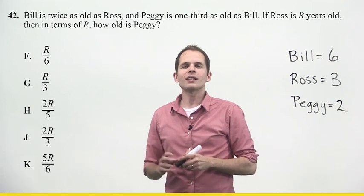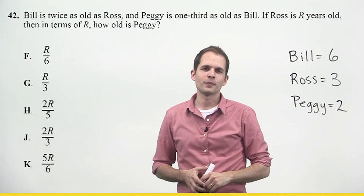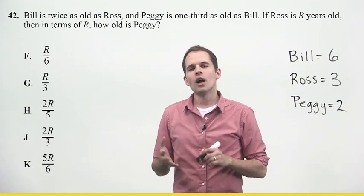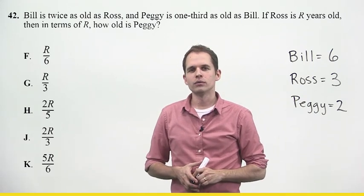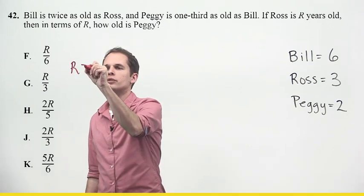So what I've done is I've taken these hypothetical ages, or ages in terms of r, and I assigned them numbers. Now what's the question asking for? It says, if Ross is r years old, well, that would make Ross equal to three. So I'll say r equals three.